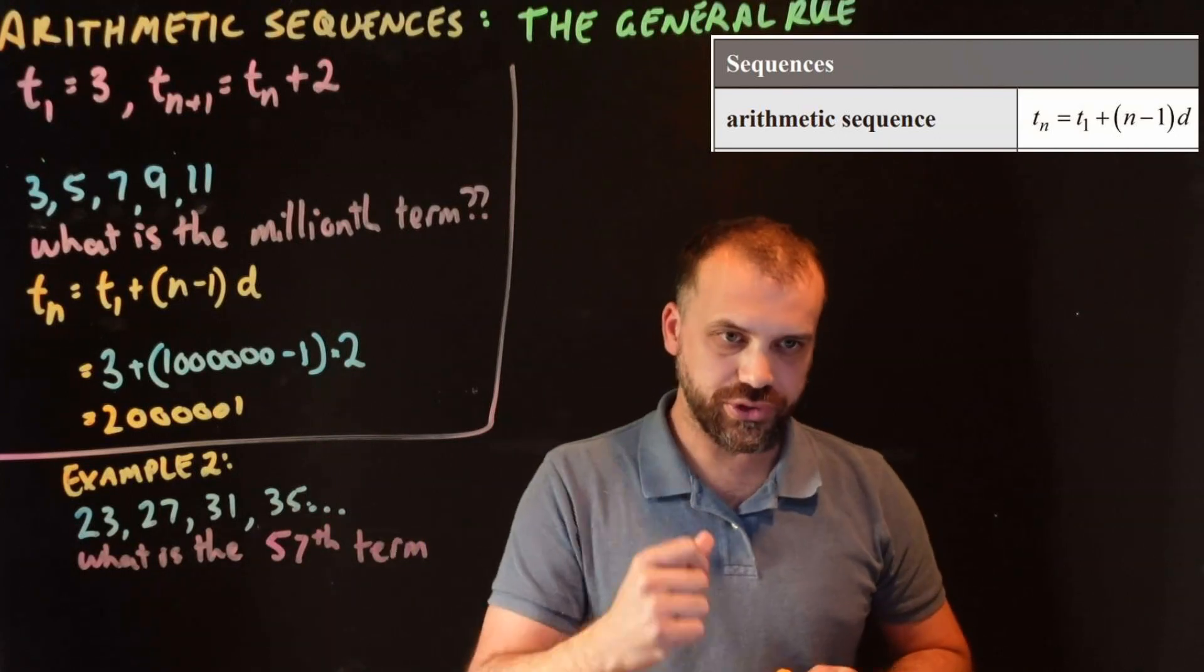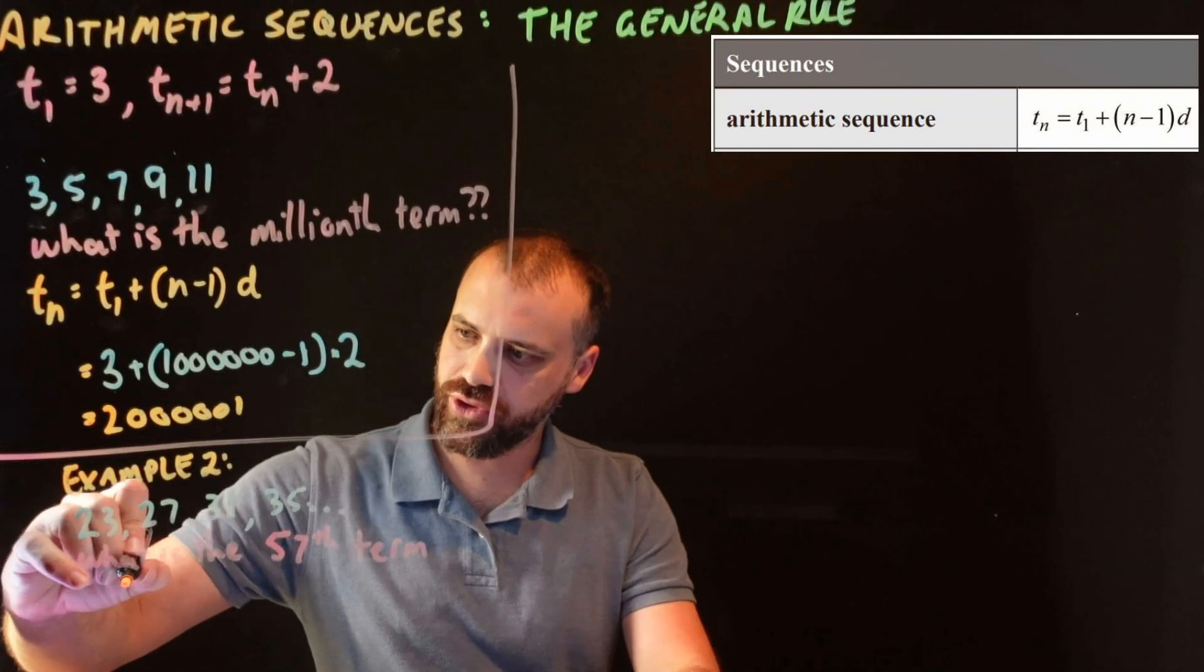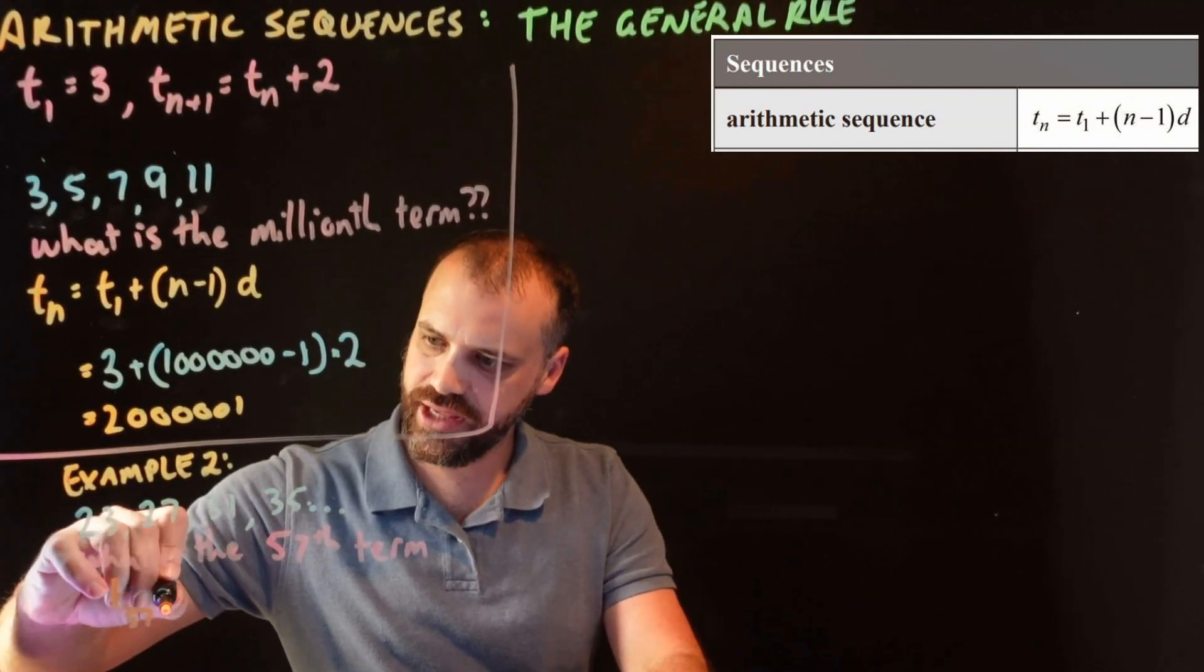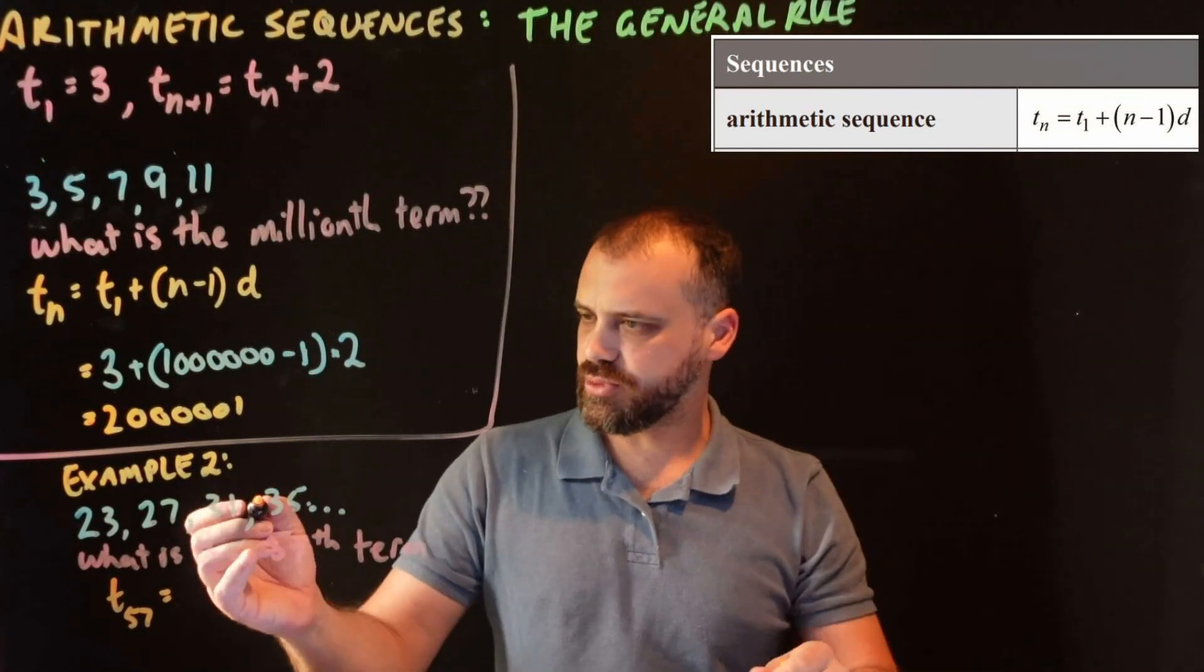You could pause the video. I'm going to do this one super fast. So I use my formula. I want to know the 57th term. So term 57 is equal to term 1. What's my first term?